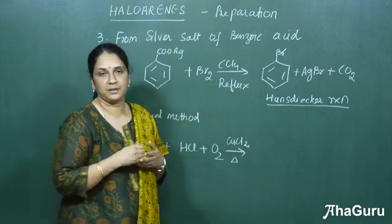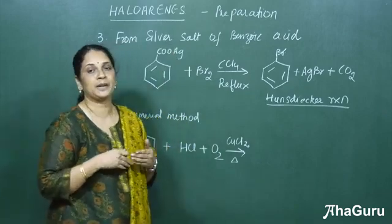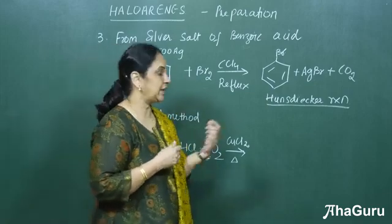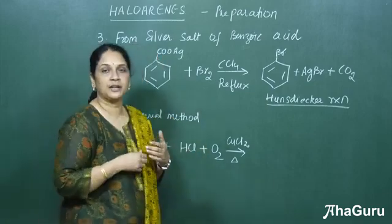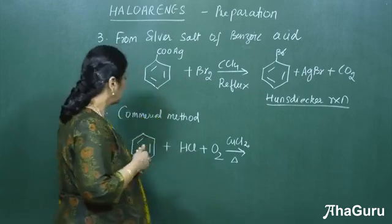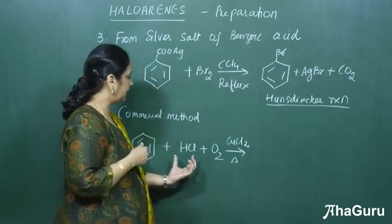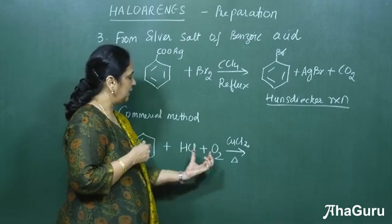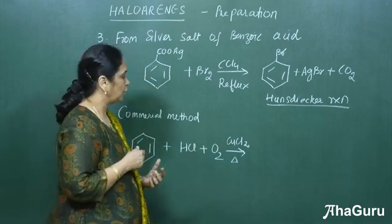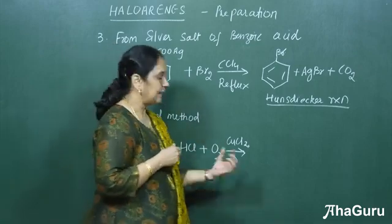The next method is the commercial method, that is if you want to prepare in large scale. We can use this method. Here also the chlorobenzene only is produced. We take the vapors of benzene, heat it with HCl plus O2. Take a cupric chloride salt and heat it.